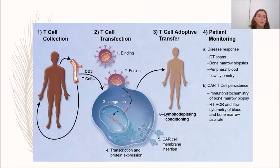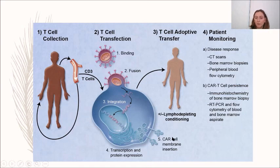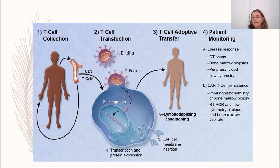The process works as follows: you collect the cells, transfect them with the genes that will be expressed as the chimeric antigen receptor, perform T cell transfer with conditioning, and then monitor the patient by assessing disease response via CT scans or bone marrow biopsy and peripheral blood flow cytometry, while assessing CAR T cell persistence by immunohistochemistry of bone marrow biopsy, RT-PCR, and flow cytometry of blood and bone marrow aspirate.